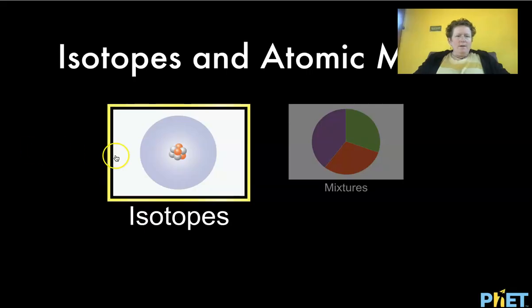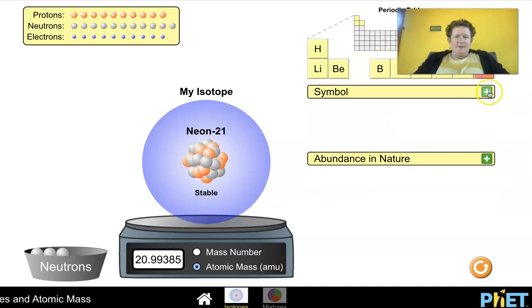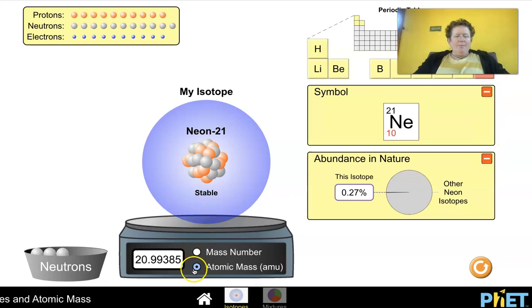So here we go. We're going to click isotopes. If we unclick these, they turn into green pluses, so click those. Make sure you have atomic mass here on the balance, you don't want mass number.